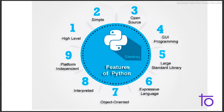Python has a large standard library — there are thousands of libraries present in Python, which is a key feature because a programmer wants a language that includes all the libraries. It is also an expressive language, and Python is an object-oriented language.